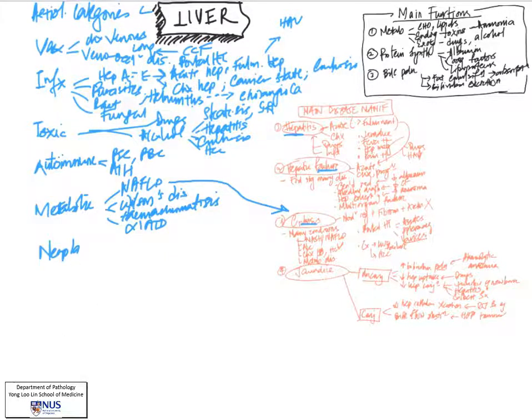N is a very big category and stands for neoplasms. It's important to note that the liver is a common catchment site for secondary tumors or metastases, especially from the GI tract, because the venous drainage of the GI tract through the portal system often goes into the liver.